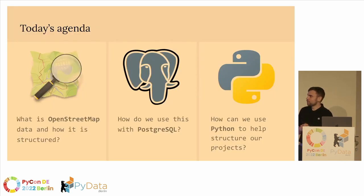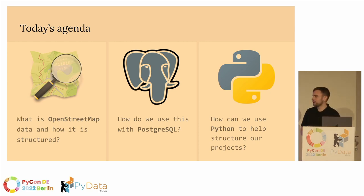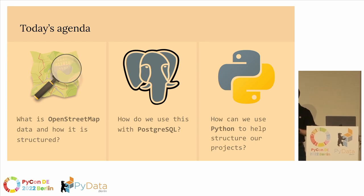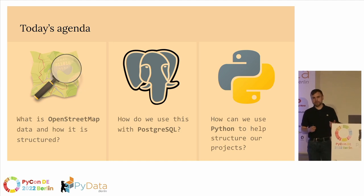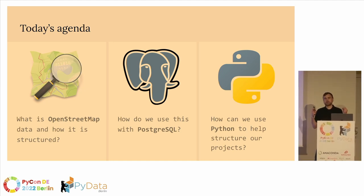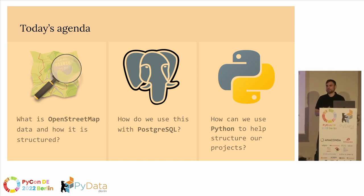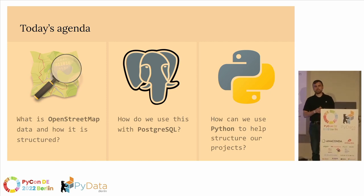What exactly are we going to cover? First off, we're going to talk about OpenStreetMap, the community surrounding it, and get into what the data types are, how it's structured, and how you can filter it and search through it. After this, we're going to talk about PostgreSQL and how to work with geographic data in PostgreSQL, specifically focusing on the PostGIS plugin. Then we'll talk about how you get OpenStreetMap data into PostgreSQL. At the very end, we're going to talk about how you structure analysis projects with Python — that will be the most fun part, because we're at PyCon.